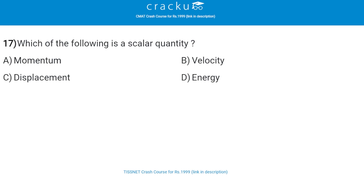Next: which of the following is a scalar quantity? The correct answer is energy, that is option D. A scalar quantity is defined as the physical quantity with only magnitude and no direction.